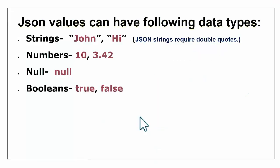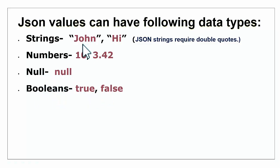JSON values can have the following data types: strings, numbers, and null values. Null means if data is unknown or unavailable, you can fill it in as null. Booleans have two values: true and false. JSON strings require double quotes — if you are writing a name or any alphabetical word, it should be enclosed within double quotes. Don't enclose null and Boolean values with double quote marks or JSON will identify them as strings, not null or Booleans.